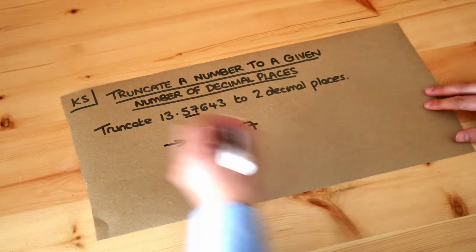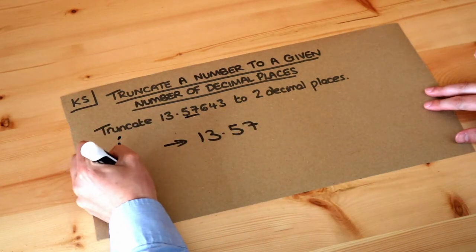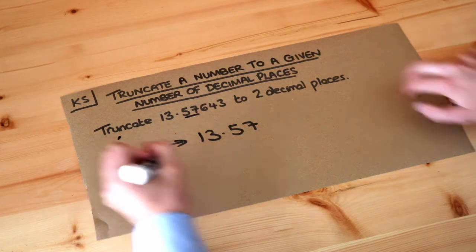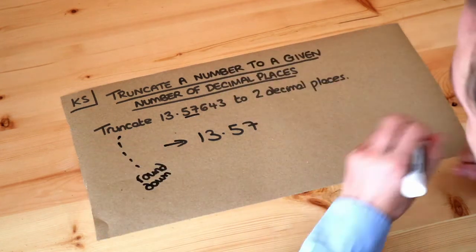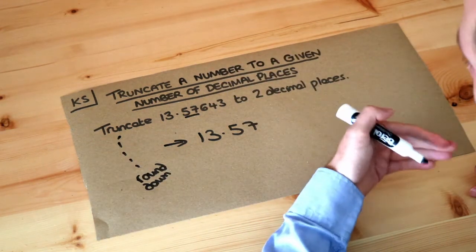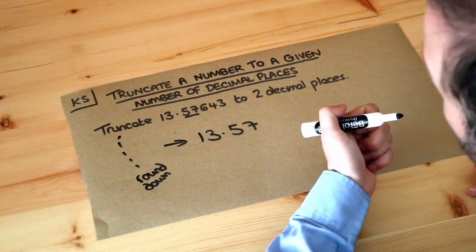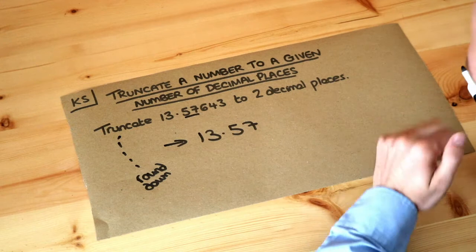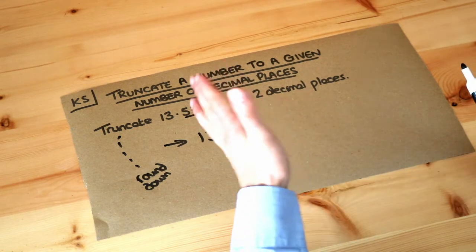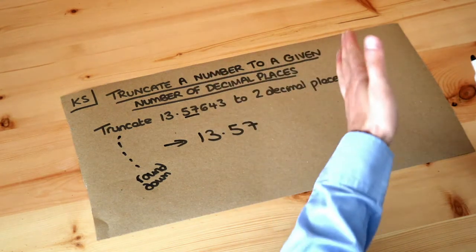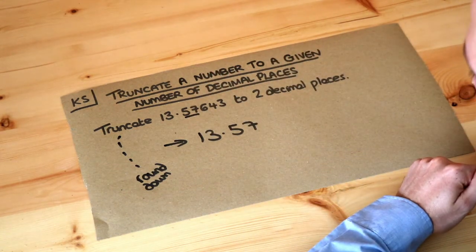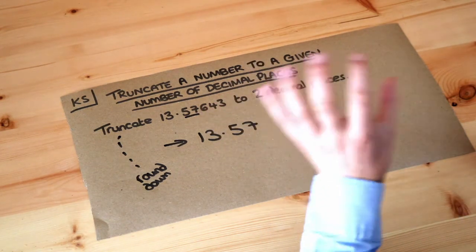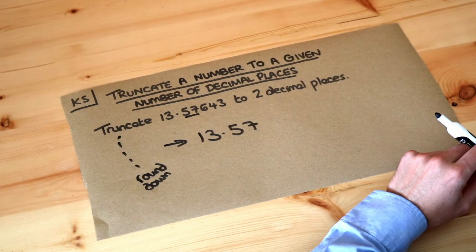So effectively truncating means to round down by cutting off the rest of the digits. In case you're wondering where we use truncation in real life, it's used in computing, for example. The way that we store decimal numbers in computing, we have a limited number of digits after the decimal point allowed, and generally the numbers are stored in truncated form rather than rounding to a certain number of digits.